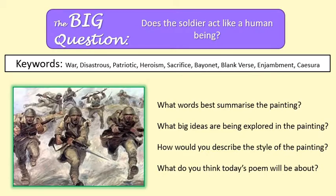Our big question, if you will, is: does the subject act like a human being, or are they more like a cog in a machine? Half-term brain! Some key words you might want to think about: disastrous, patriotic, charismatic, sonnet, form, verse form, genre, and caesura. If you're not sure of any of those words, Google them — you have all the time.